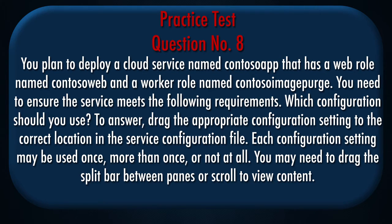Question number 8. You plan to deploy a cloud service named ContiZoep that has a web role named ContiSowWeb and a worker role named ContiSowImageBurge. You need to ensure the service meets the following requirements. Which configuration should you use? To answer, drag the appropriate configuration setting to the correct location in the service configuration file. Each configuration setting may be used once, more than once, or not at all.